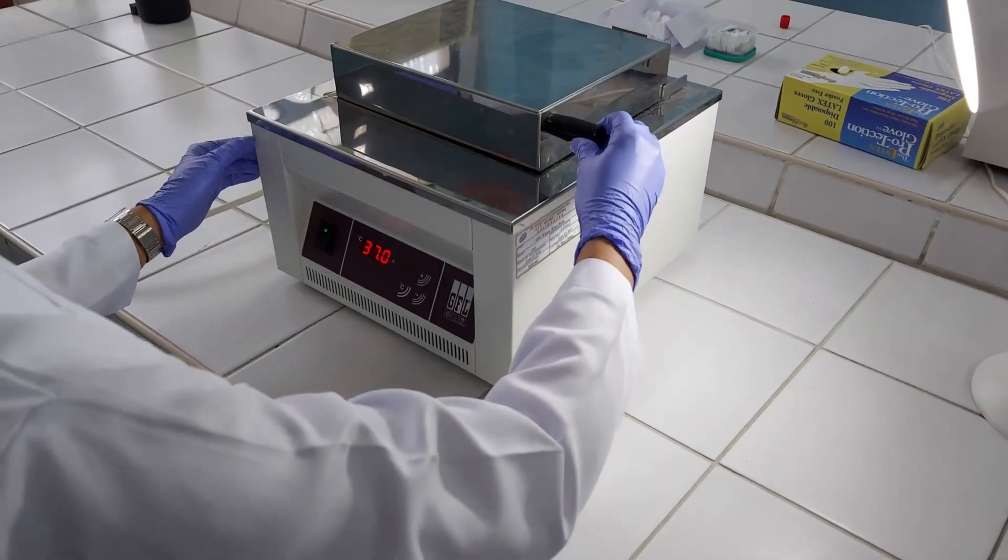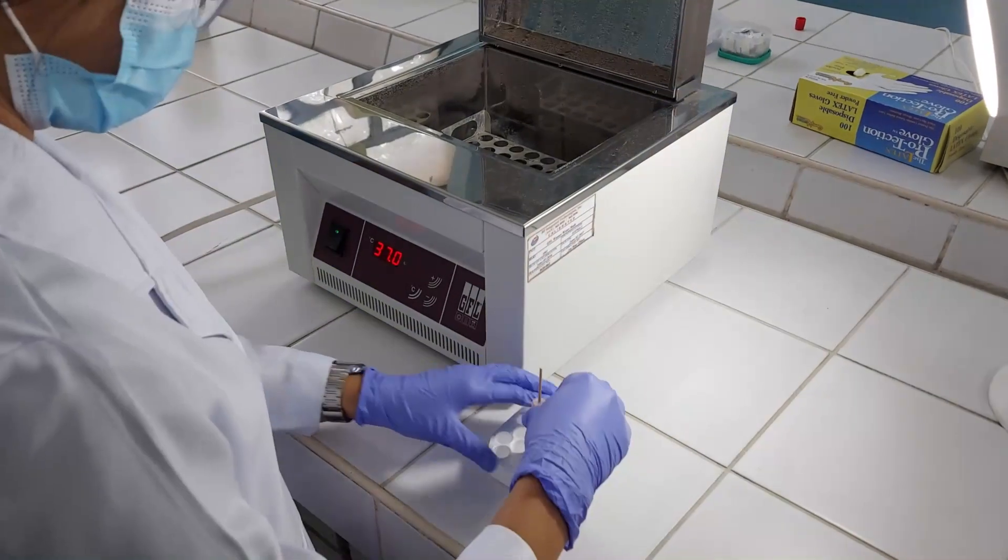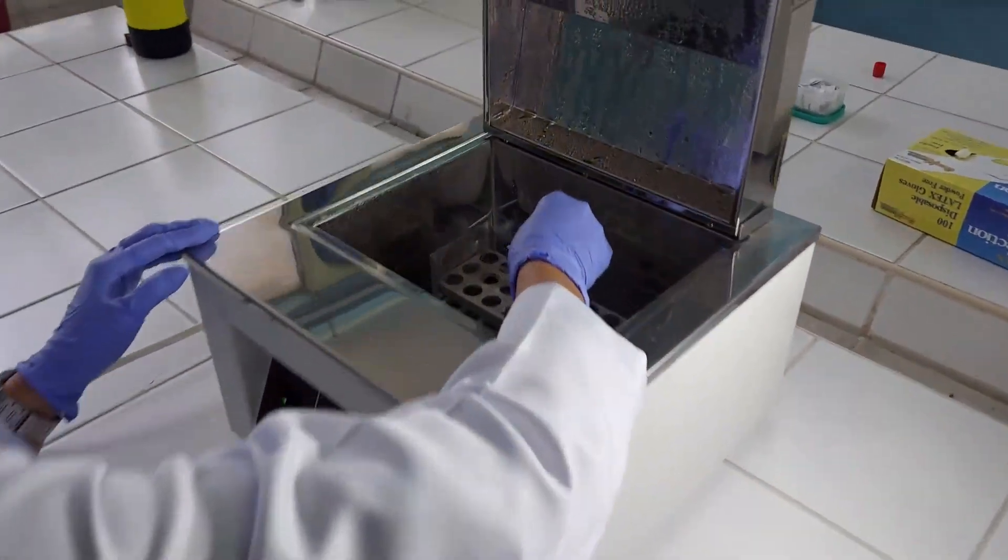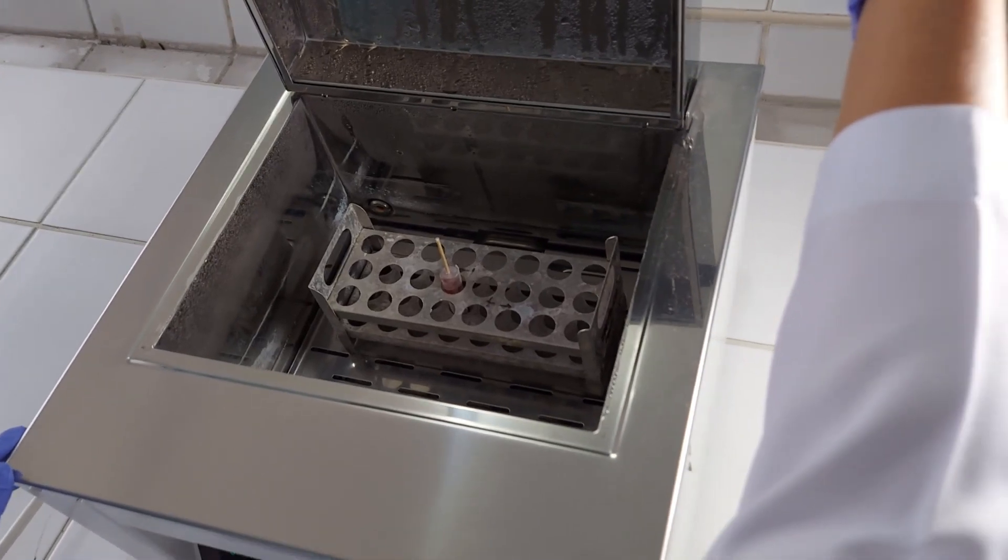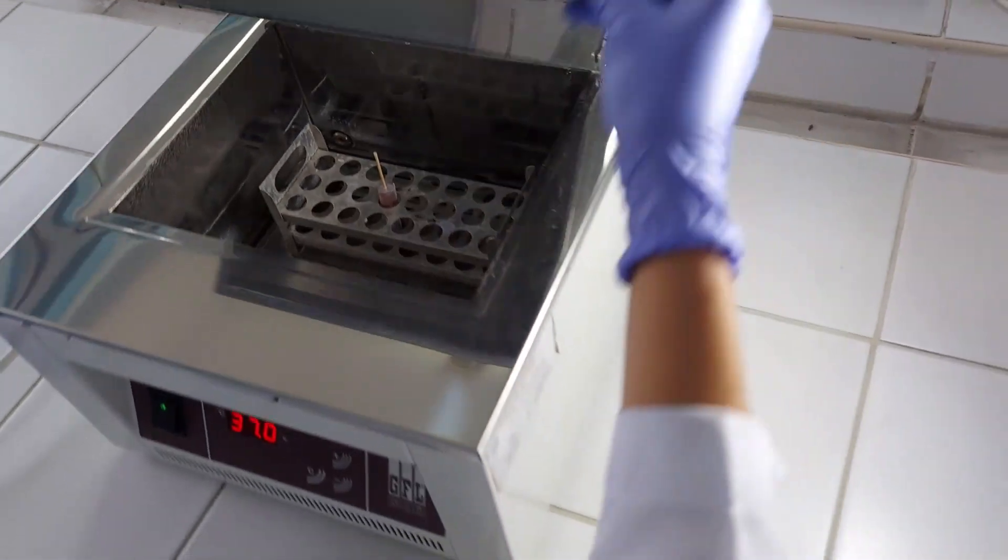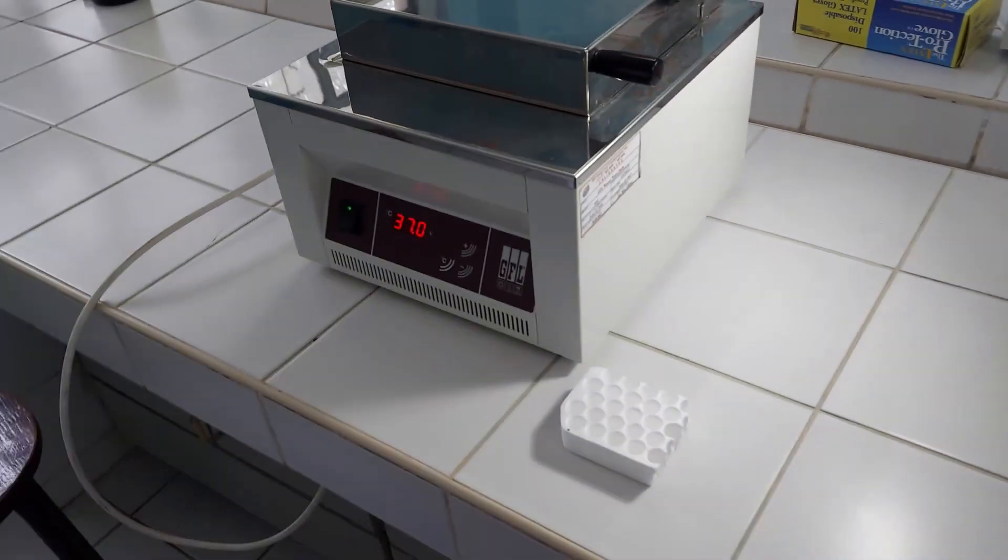Place the tube at 37 degrees Celsius water bath until clot retraction is observed. Clots formed after the first hour may be removed by passing an applicator stick around the inside of the tube and allow the tube to be incubated again for another hour.